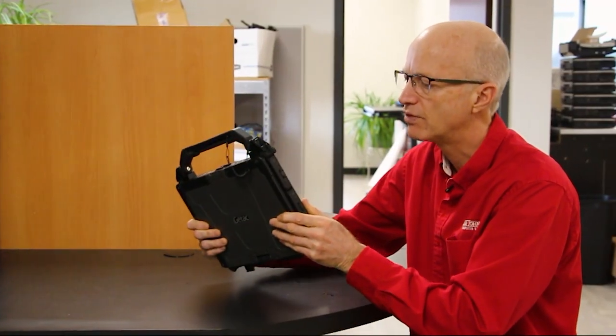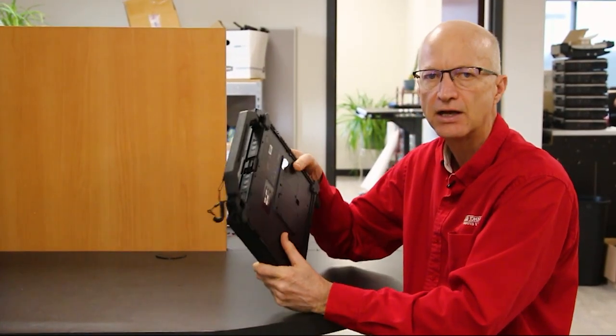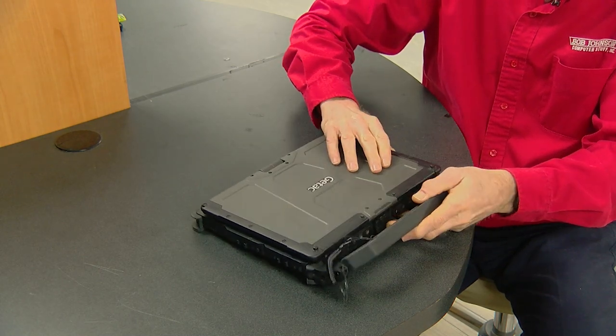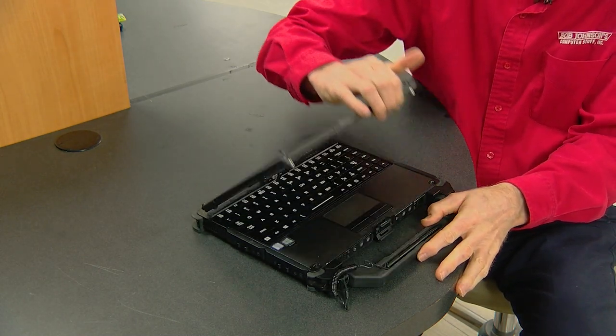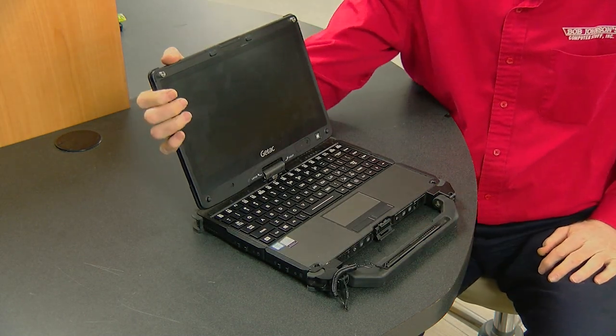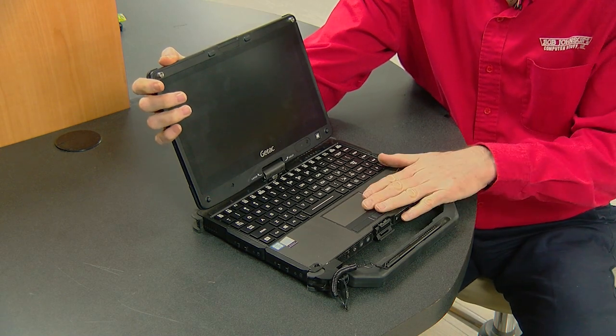Number six, number six on this laptop is the fact that it has two battery bays. That's right, you can have two batteries in this unit and they go right here on the side, on this side and on this side. They have little covers to cover them.